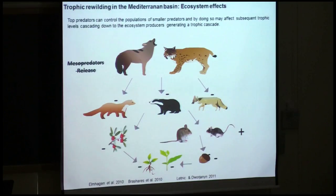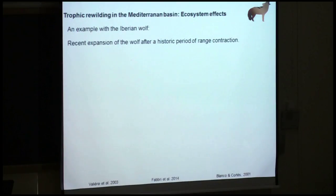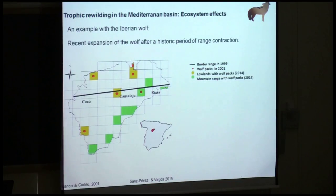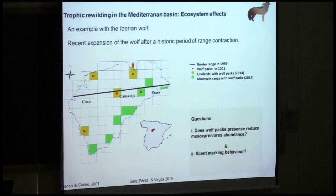Now we will provide some empirical results using this theoretical framework as background. The first example is with the wolf, which has experienced a recent expansion after a historical period of range contraction in the Iberian Peninsula. We performed a study in an area of central Spain where wolves were present before 2000 and later expanded. We selected plots with and without wolves and wanted to answer whether wolf presence reduces mesocarnivore community abundance and whether wolf presence modifies the scent-marking behavior of the mesocarnivore community.